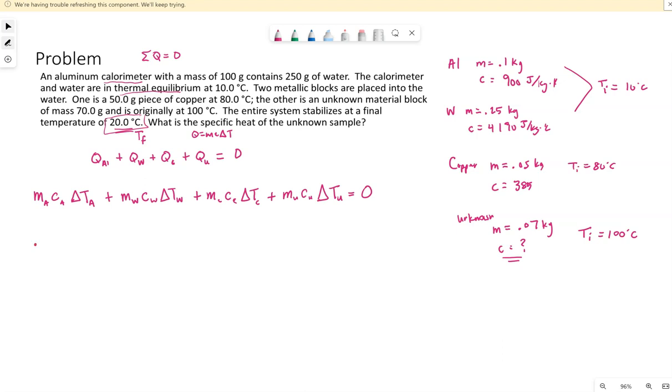Aluminum, 0.1 kilograms, C is 900. Aluminum ends up at a final temperature of 20, and it started at an initial temperature of 10. Keep in mind, delta T is final temperature minus initial. The second term, our water, plus mass of the water, 0.25, C, 4190, final temperature of 20, initial temperature of 10.